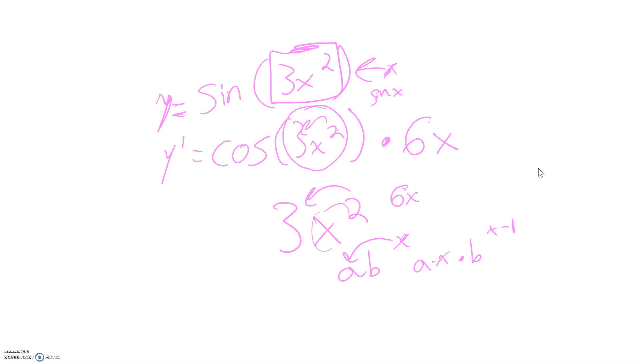And then your product, your power up here, you just subtract it by 1. So, it's 2 minus 1. So, you get 6x to the first, which just equals 6x. So, with all of that in mind, this is the solution to the derivative of sine of 3x squared.